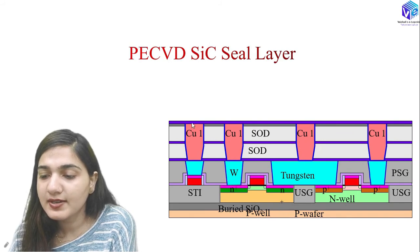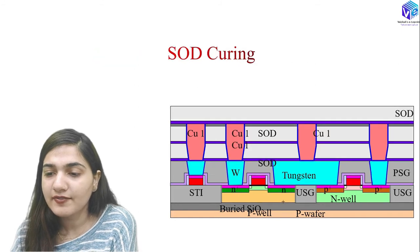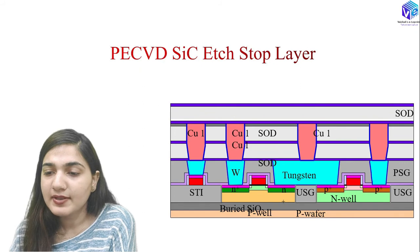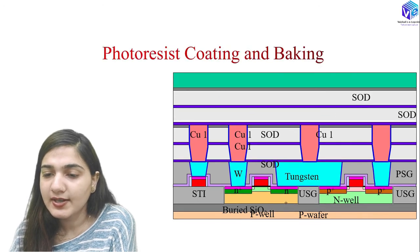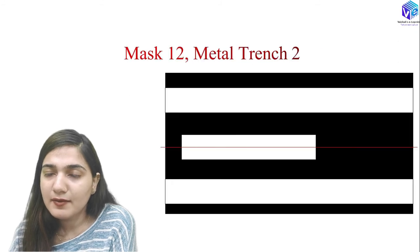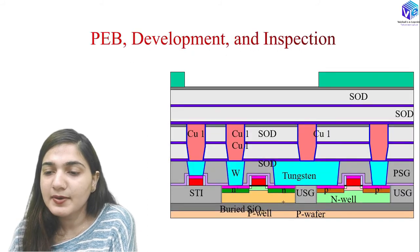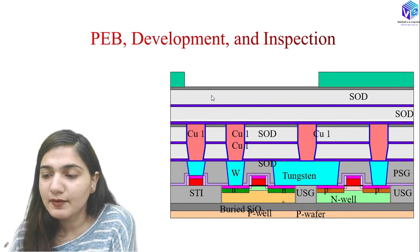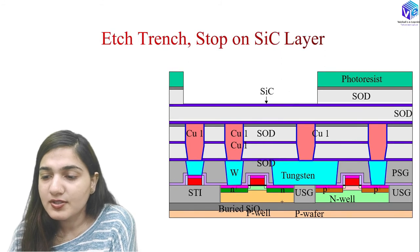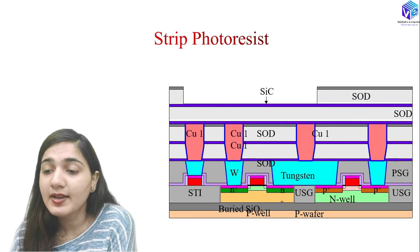The PE-CVD silicon carbide seal layer, SOD coating and curing, silicon carbide etch-stop layer, SOD coating and curing, and PE-TEOS capping layer are all repeated for the second metal layer. Mask 12 — the metal trench-2 mask — is used for alignment, exposure, PEB development, and inspection. After etching the PETEOS and SOD layers (stopping on silicon carbide), the photoresist is stripped.